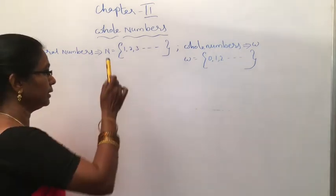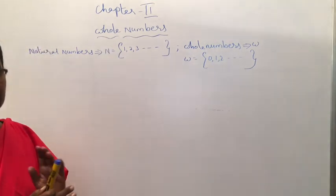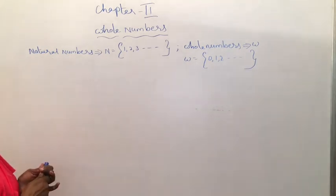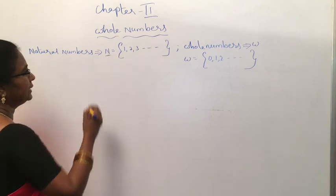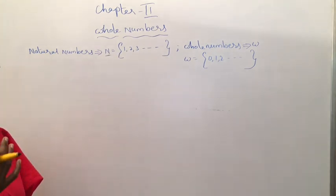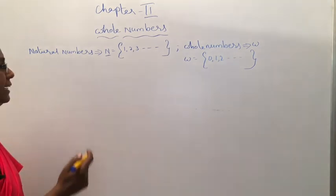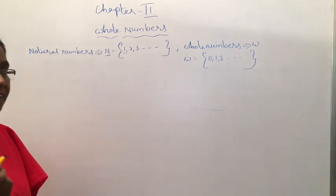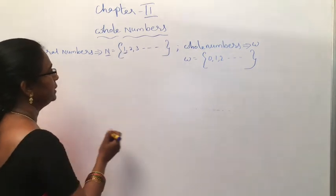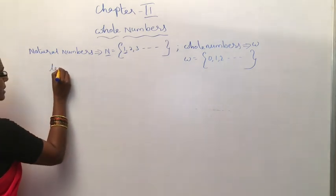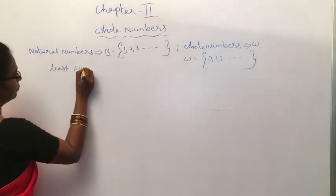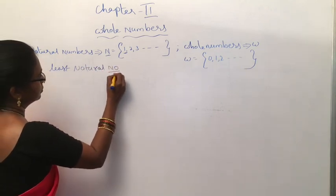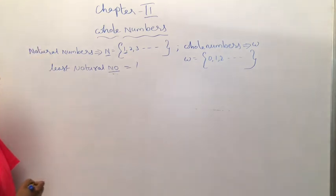Whole numbers are related to natural numbers. First we recall about natural numbers. Natural numbers are denoted by capital N. The other name of natural numbers is counting numbers. Natural numbers start with 1 and there is no end, so natural numbers are infinite. The least natural number is 1.